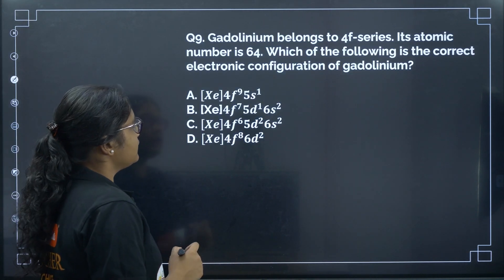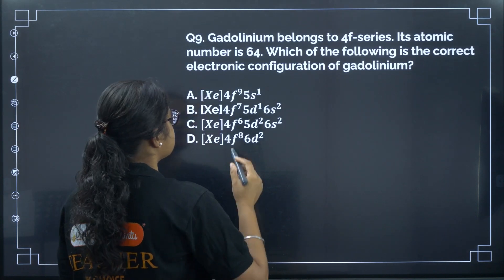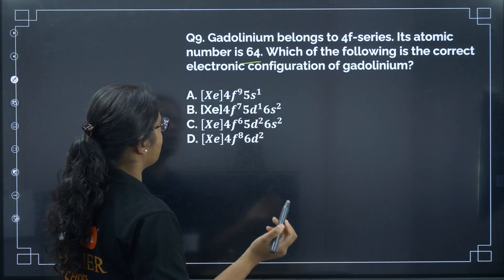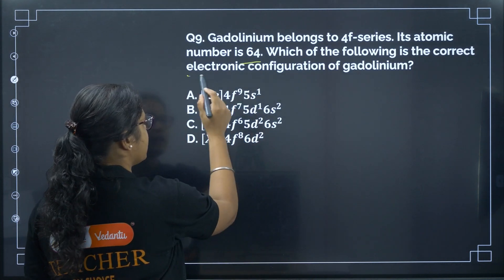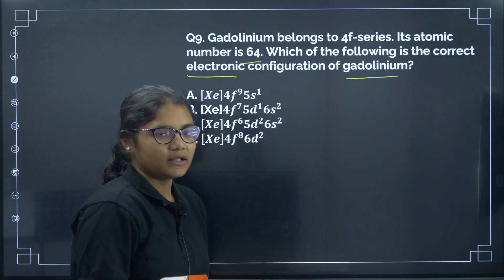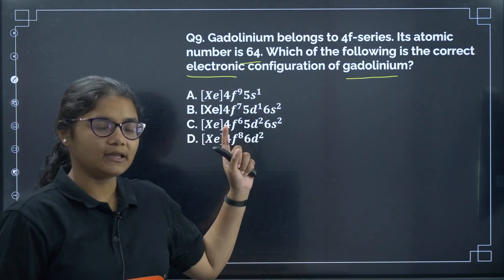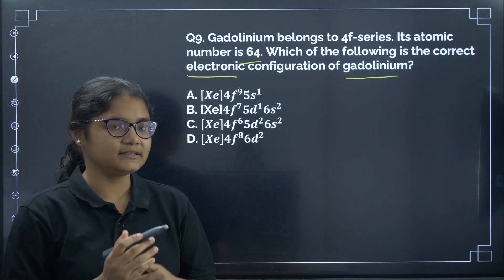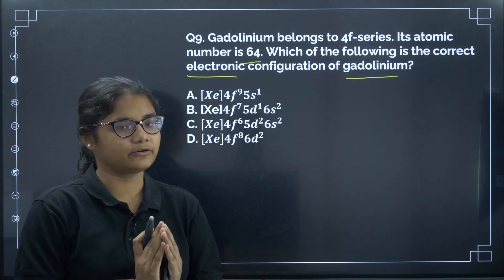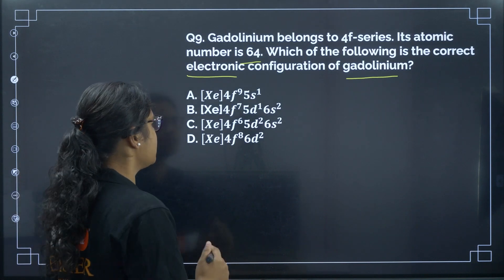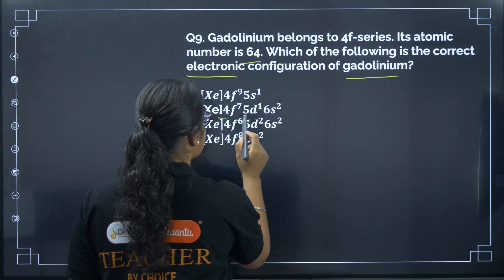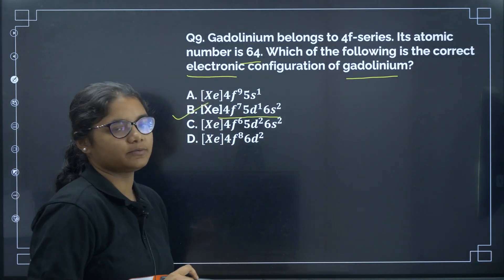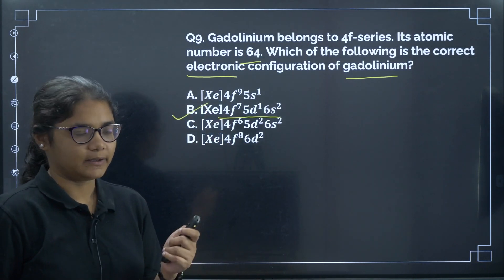Question 9: Gadolinium belongs to the 4f series with atomic number 64. This is a very important element from the lanthanide series. Its correct electronic configuration is 4f⁷5d¹6s². The correct answer is option B.